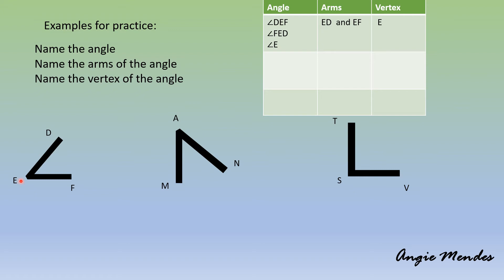The arms of the angle are ED and EF. Remember the sides of the angle are known as the arms of the angle. The vertex of the angle is the common point where both the rays are meeting, so we have vertex E. Similarly, try to name the angles for the second and third examples.